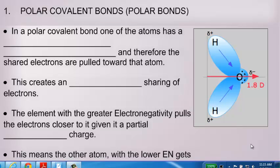Hi everybody, welcome back. This is Unit 6, Lesson 6, and in this unit we're going to be talking about the different types of covalent bonds.